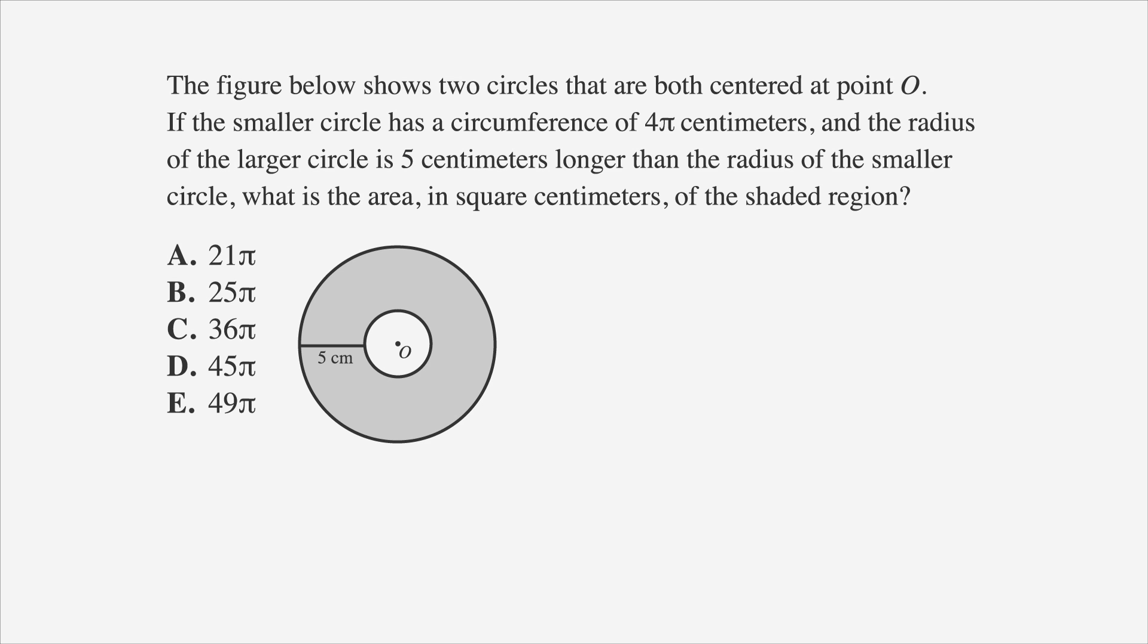Here's the question. The figure below shows two circles that are both centered at point O. If the smaller circle has a circumference of 4 pi centimeters, and the radius of the larger circle is 5 centimeters longer than the radius of the smaller circle, what is the area in square centimeters of the shaded region? Okay, ready, set, pause.